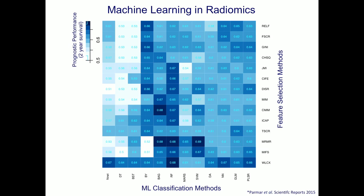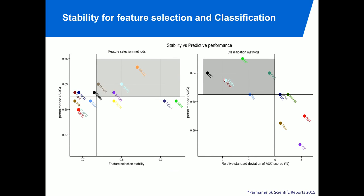Some feature selection methods work very well with some classification methods and others work less well. We found that random forests and support vector machines work very well, and MRMR — maximum relevance minimum redundancy feature selection — is really able to handle the redundant data we have. By doing such analyses, we can also look at stability versus classification: if we take subsets of a dataset, we should have more or less the same model each time with similar performance.